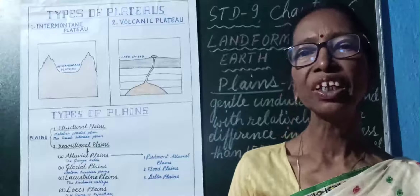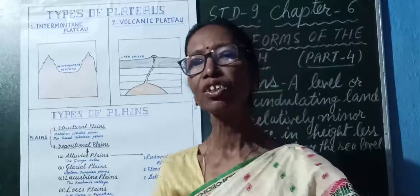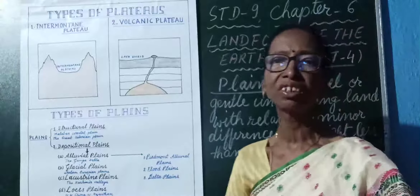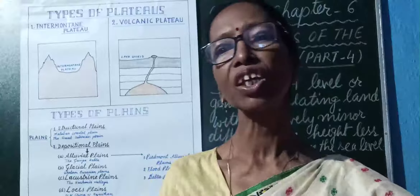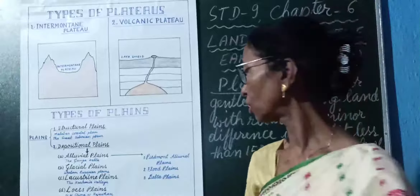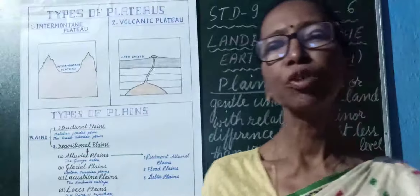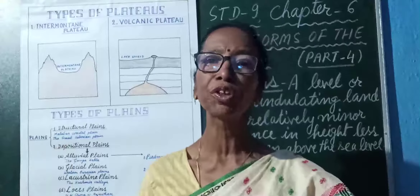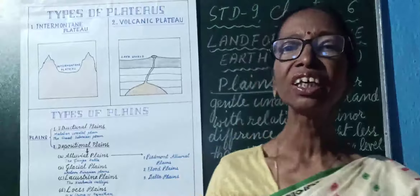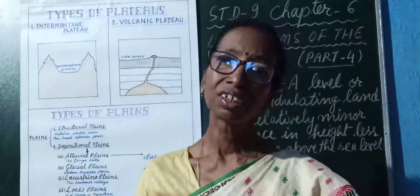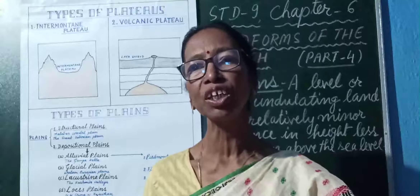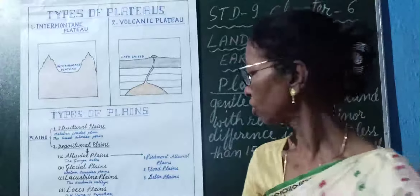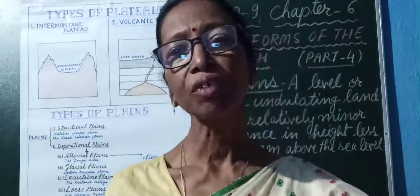The second type is depositional plains. There are many different types of depositional plains formed due to the depositional work by different agents. First of all, alluvial plains are depositional plains. These are formed due to the deposition of alluvium brought by rivers. The large Ganga Plain in our country, located south of the Himalayas in the northern part of India, is a good example of alluvial plains. Alluvial plains can be divided into three types: Piedmont Alluvial Plain, Flood Plain, and Delta Plain.